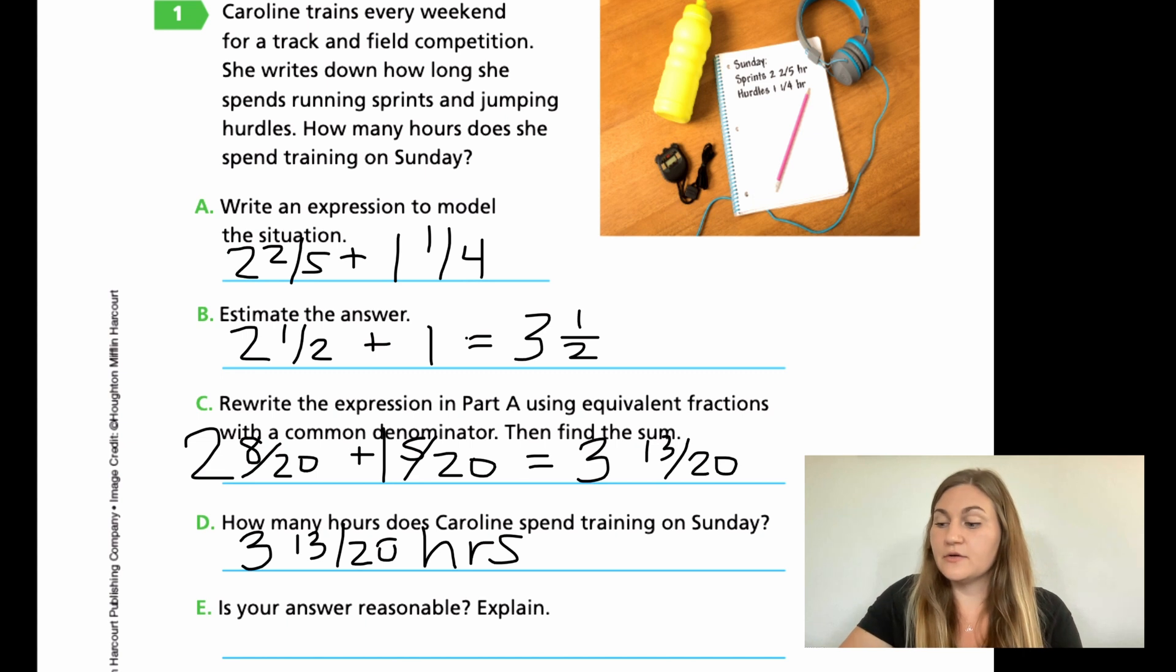And then E, is your answer reasonable? I love this question because I know that 3 matches my 3 in my estimate. So off to a good start there. But my 13/20, is that close enough to half? I know that half of 20 is 10. So if it said 10 over 20, it would be the exact answer. And 13 over 20 is pretty close. So I know that my actual answer of 3 and 13/20 is very close to 3 and a half. So yes, it is reasonable because it was pretty close to my estimate.